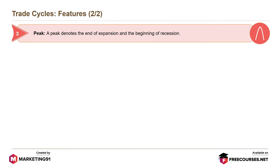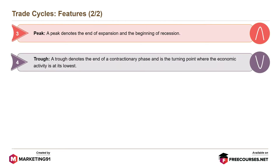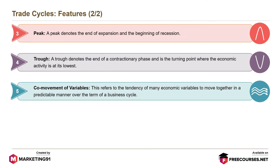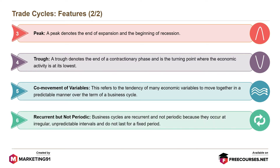Peak denotes the end of expansion and the beginning of recession. Trough denotes the end of a contractionary phase and is the turning point where economic activity is at its lowest. Co-movement of variables refers to the tendency of many economic variables to move together in a predictable manner over the term of a business cycle. Business cycles are recurrent but not periodic, as they occur at irregular, unpredictable intervals and do not last for a fixed period.